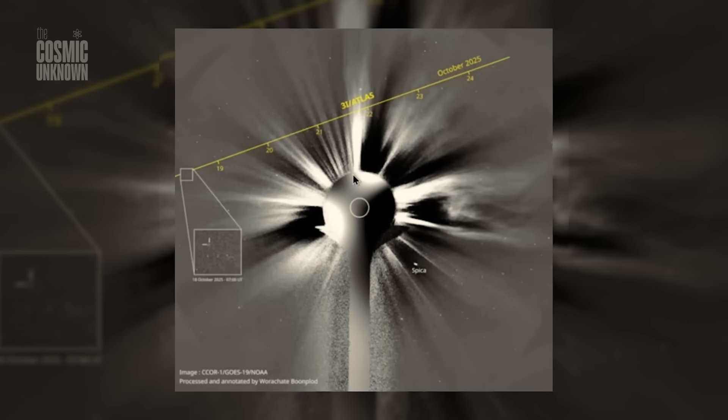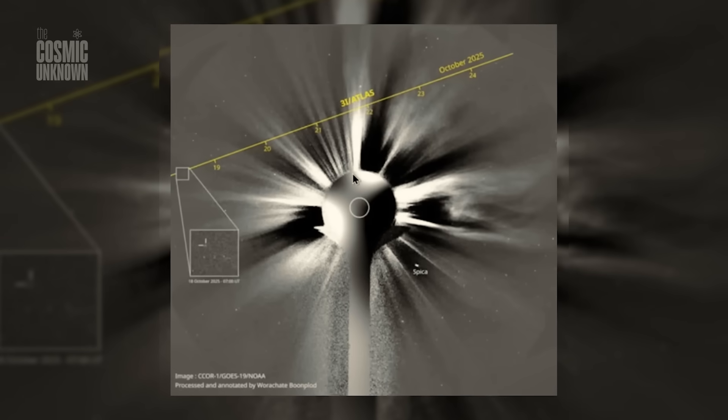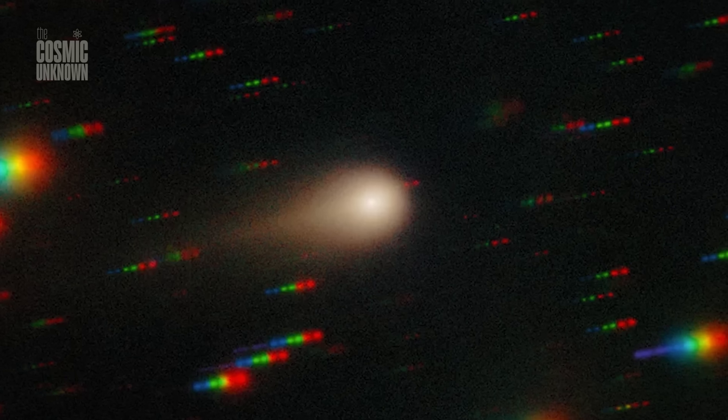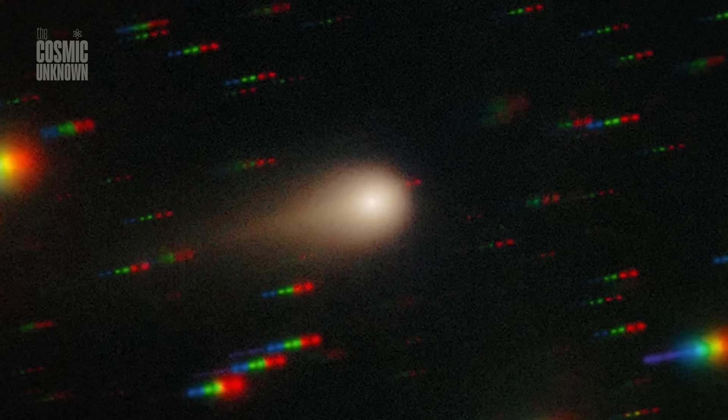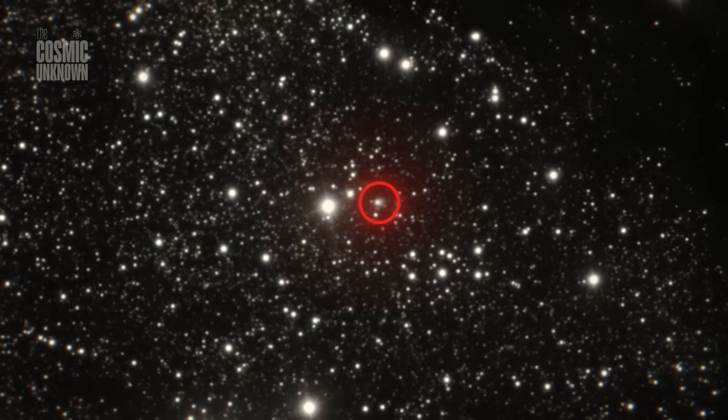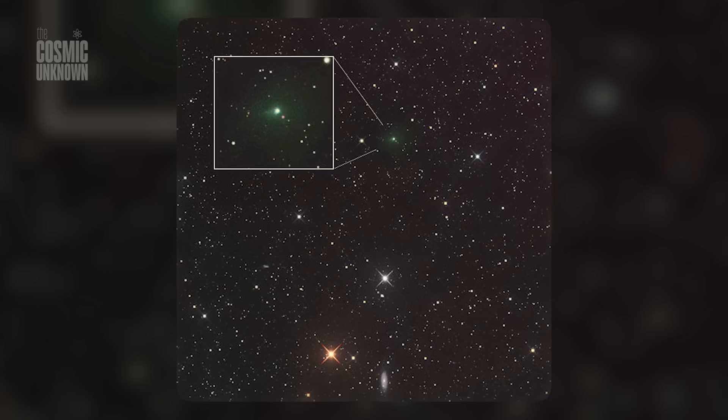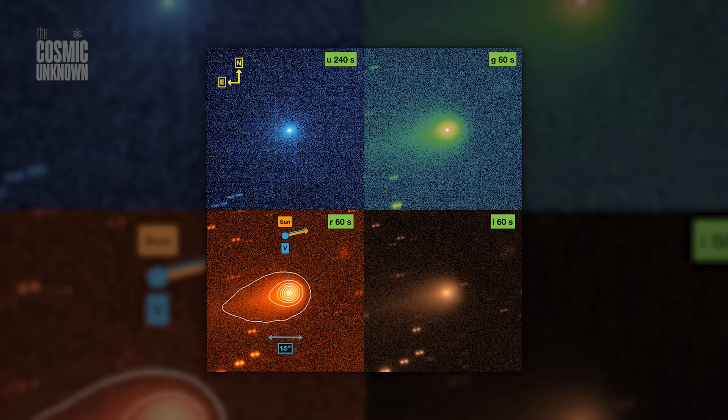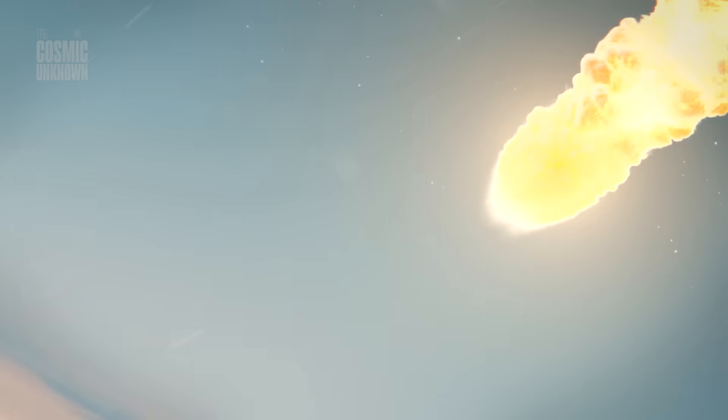Almost like the glow moves around the object instead of staying centered the way it usually does in most comets. There were also reports of brightness changing in short bursts, the kind of thing you don't expect unless the surface is releasing gas or dust in quick pulses. And in some time lapse videos, the light around 3i Atlas looked stronger on one side and then stronger on another, something that made a few observers wonder if there was more happening under the surface than the image suggests.